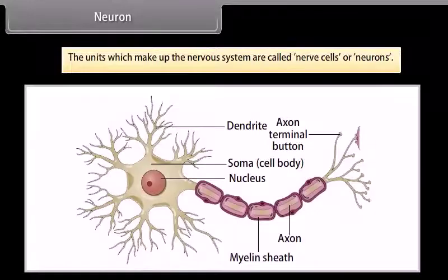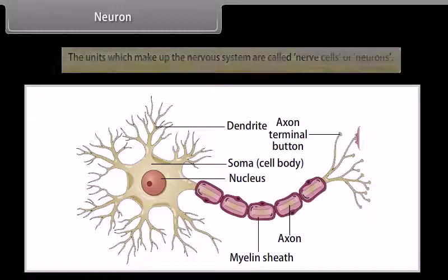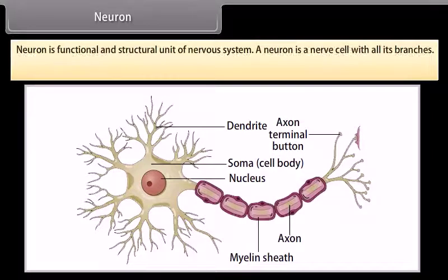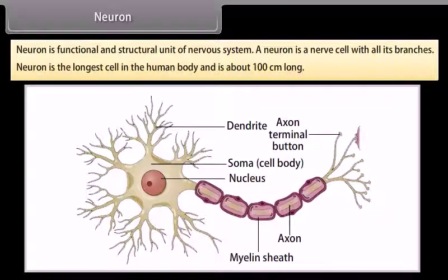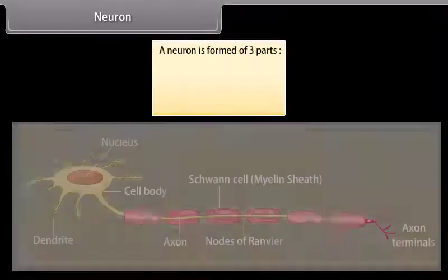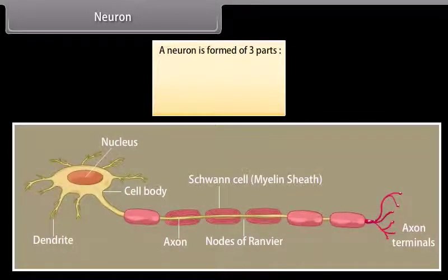Neuron. The units which make up the nervous system are called nerve cells or neurons. A neuron is the functional and structural unit of the nervous system. It is a nerve cell with all its branches. The neuron is the longest cell in the human body and is about 100 cm long. A neuron is formed of three parts: cytone, dendrites, and axon.